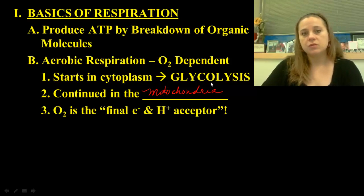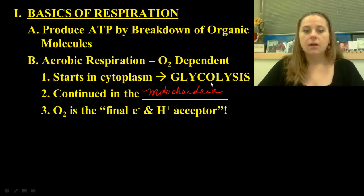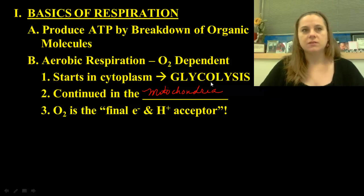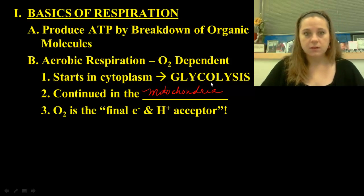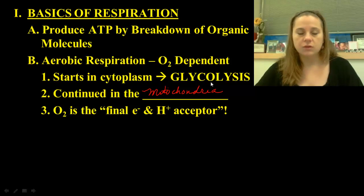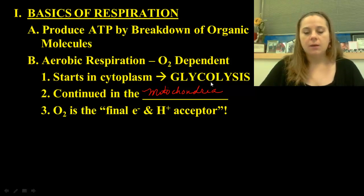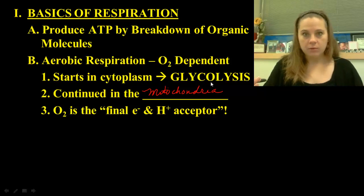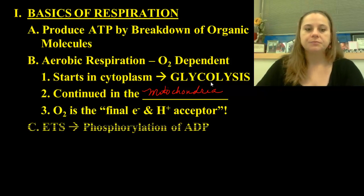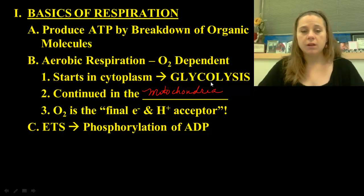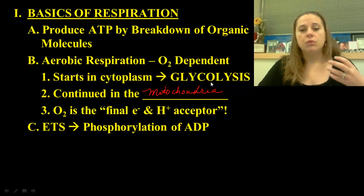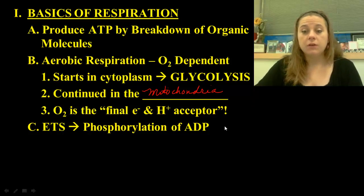Oxygen actually doesn't play its role in this process until the very end — it is the final electron and hydrogen ion acceptor. It's funny: photosynthesis is almost a reversal of this process. Oxygen is one of the first things released in photosynthesis, but in cell respiration it's the last reactant used. It sits ready to grab electrons in the electron transport system, which ultimately sets up a huge gradient of hydrogen ions and electrons to build ATP.